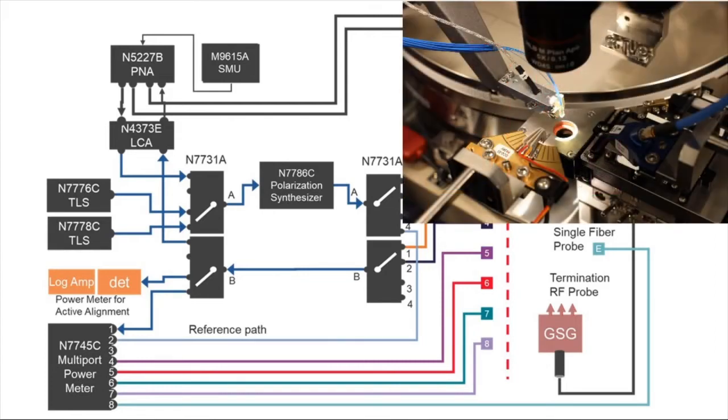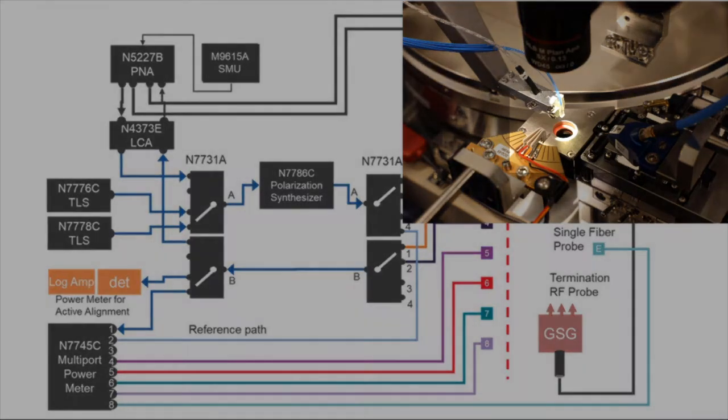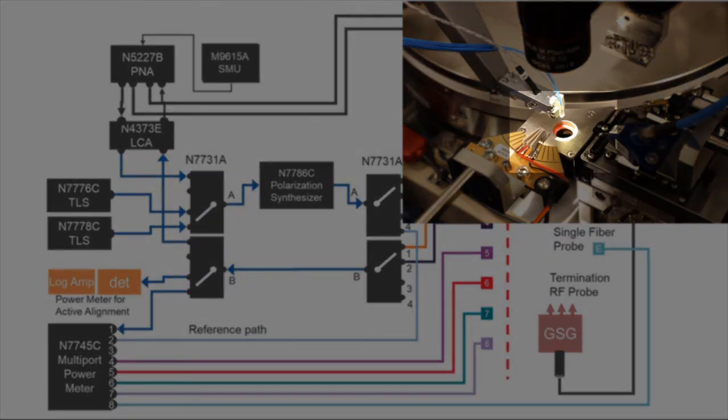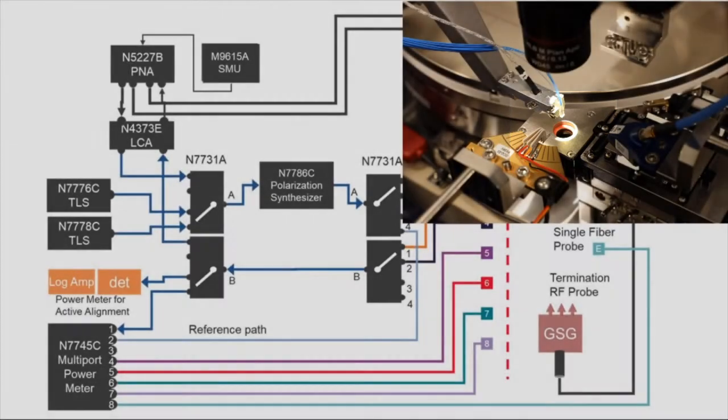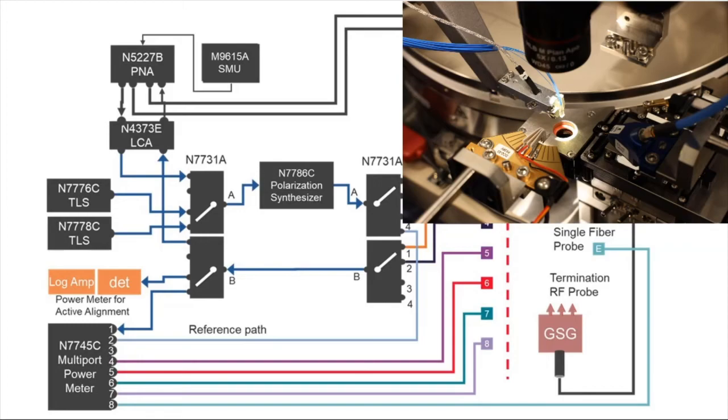With a very sophisticated calibration concept using the built-in photo detector or power meter in the probe station, we are able to de-embed and remove all the insertion losses of the fiber infrastructure to the DUT interface.